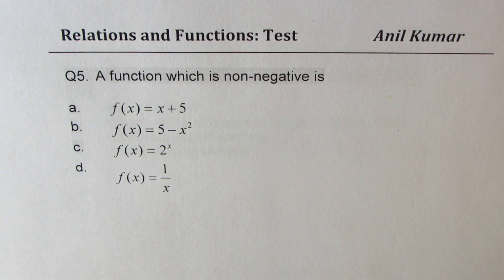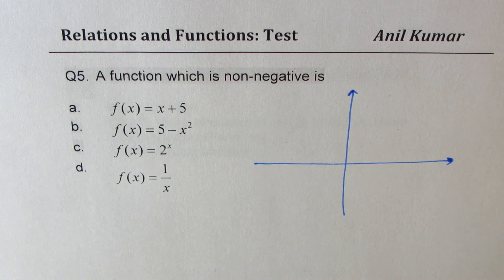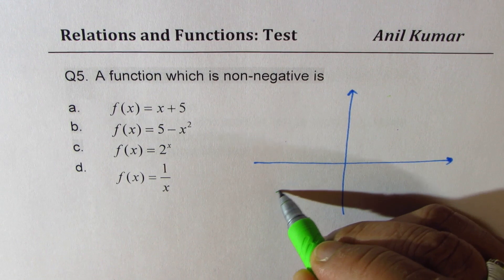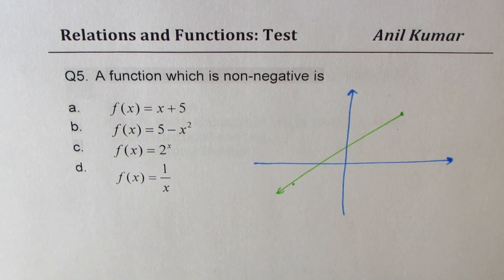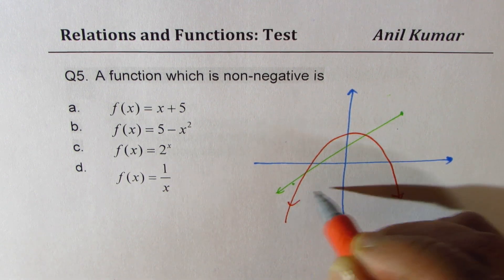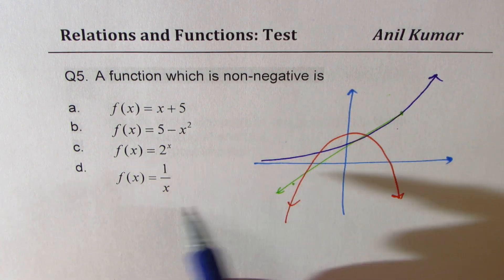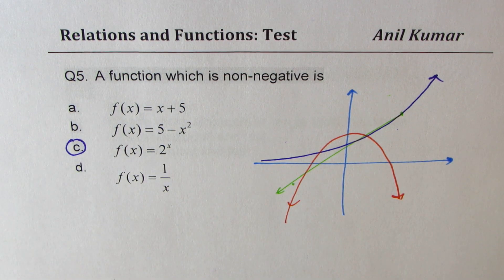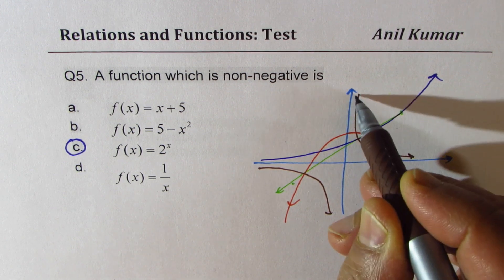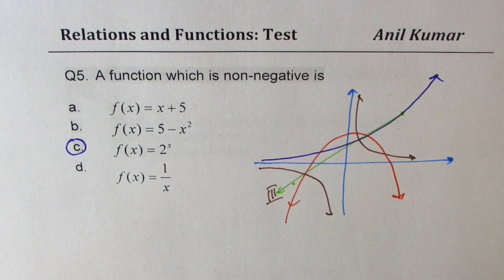Question number five: a function which is non-negative means always positive or zero. The linear function goes negative. The quadratic 5 - x² is a downward parabola — also goes negative. The exponential function 2^x is always positive, so that is the right answer. The reciprocal 1/x is negative in quadrant 3. So option C is correct. This is a good time to review parent functions.